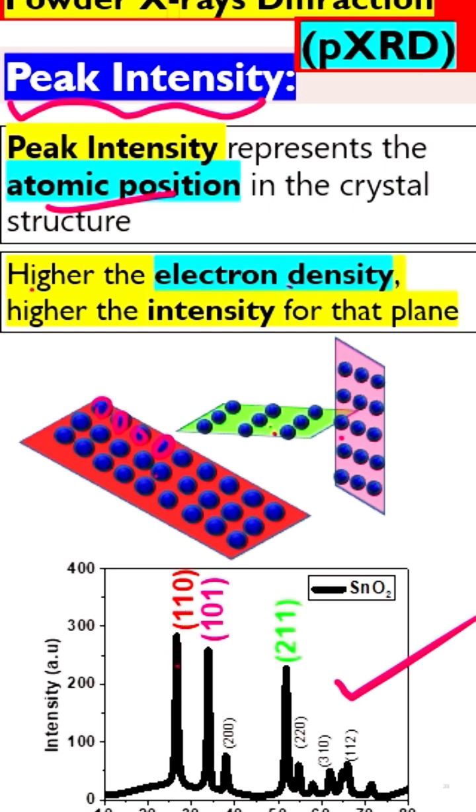Higher the electron density, this means that in atom there are electrons. So if we have more atoms, we will have more electrons and we will have higher intensity.